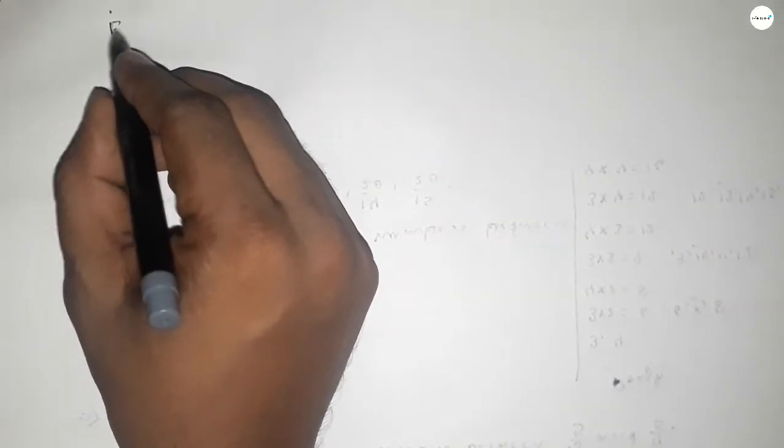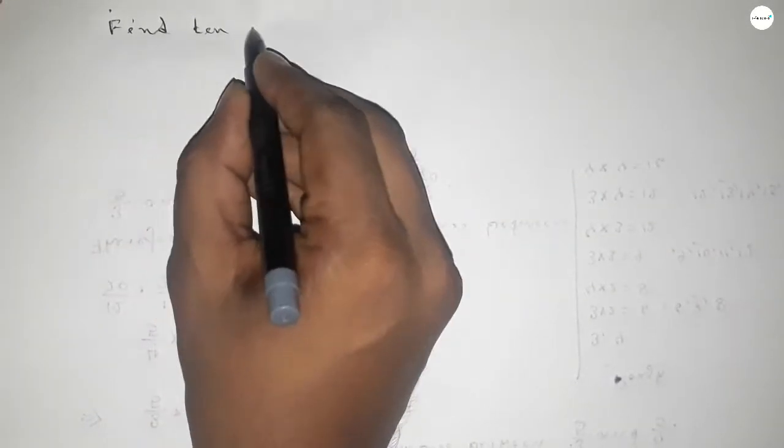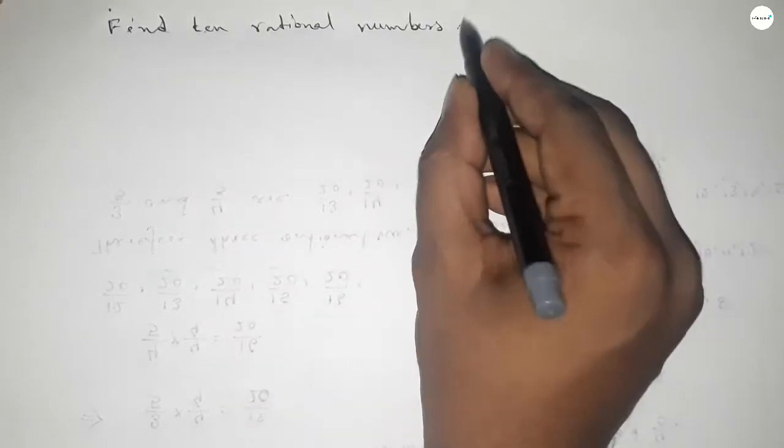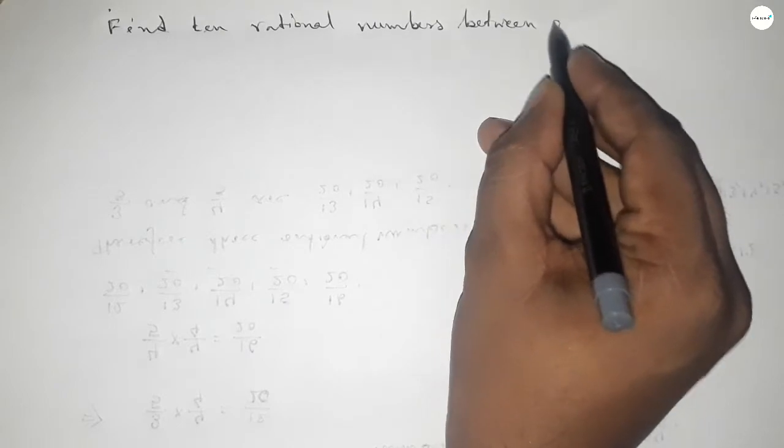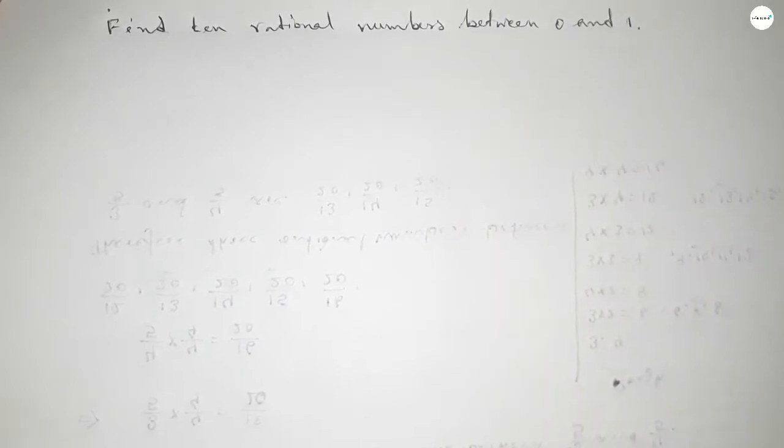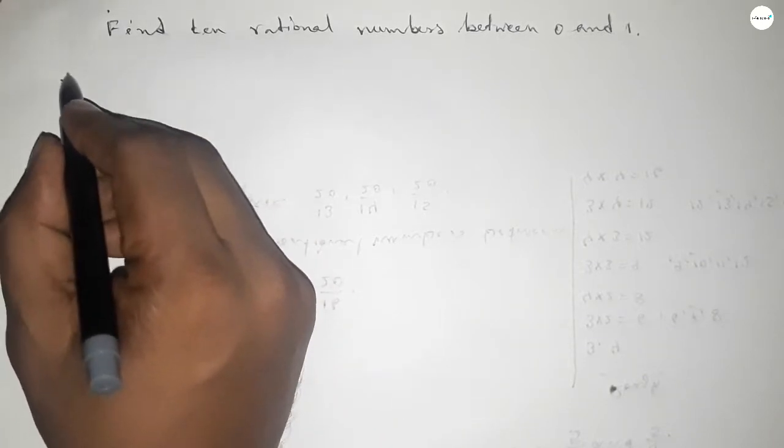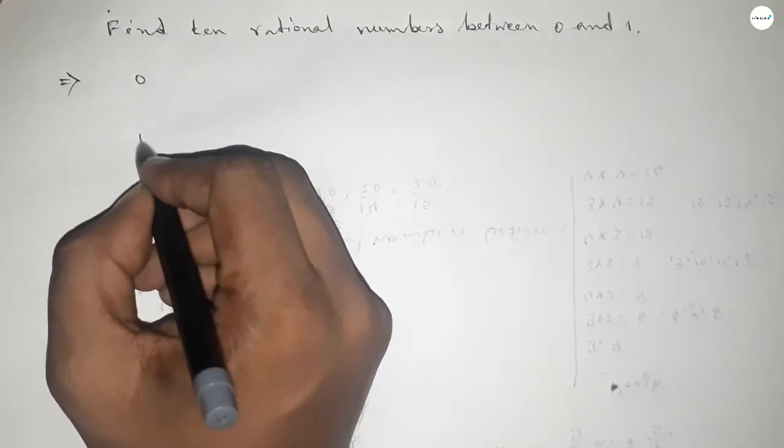Hi everyone, welcome to SSR Classes. Today in this video we have to find 10 rational numbers between 0 and 1. So finding 10 rational numbers between 0 to 1, let's start the video. First of all, write down here 0 and 1.